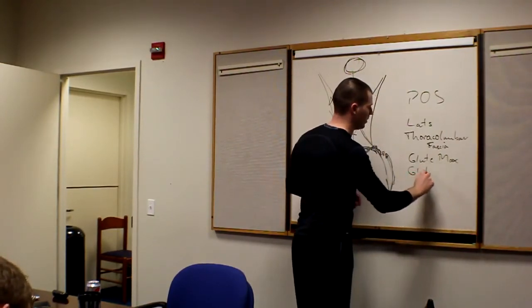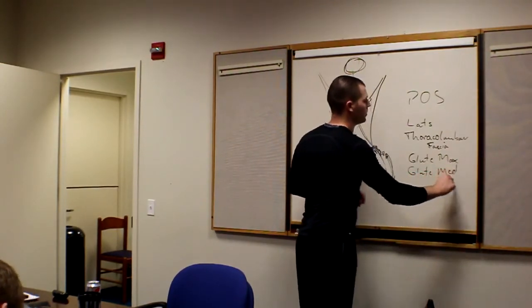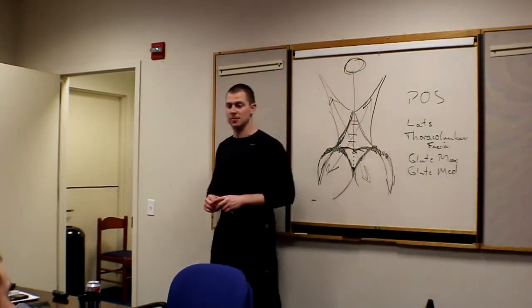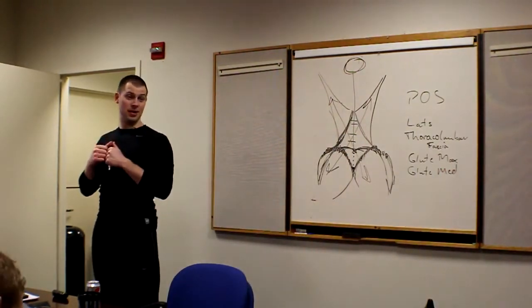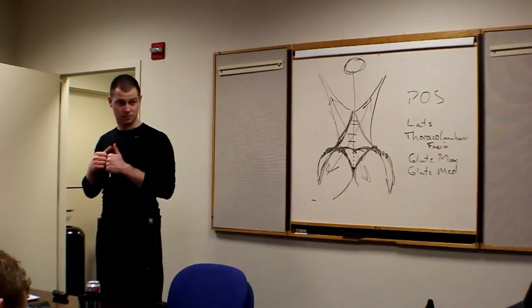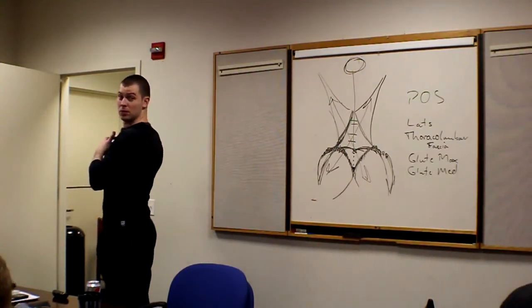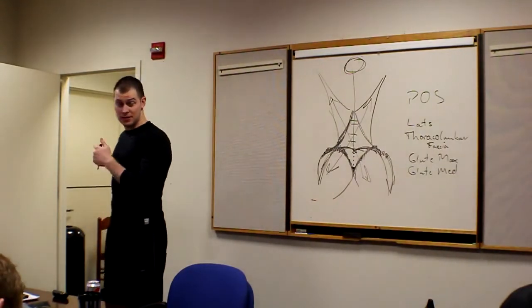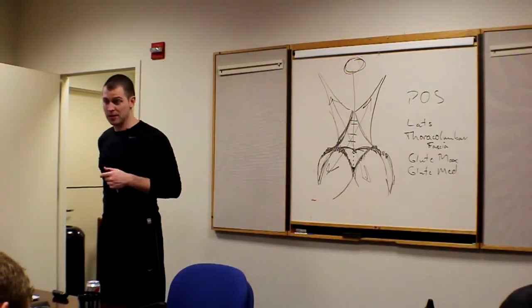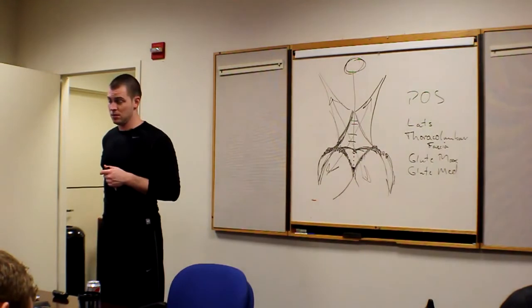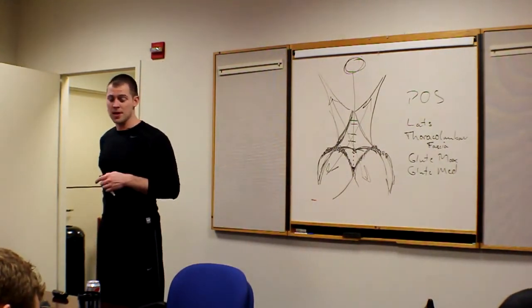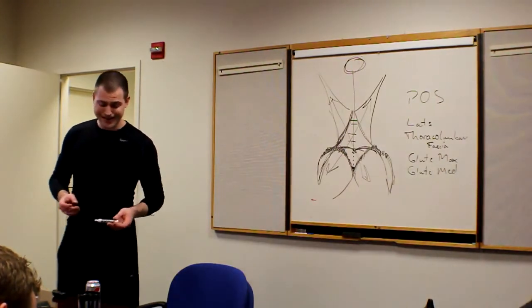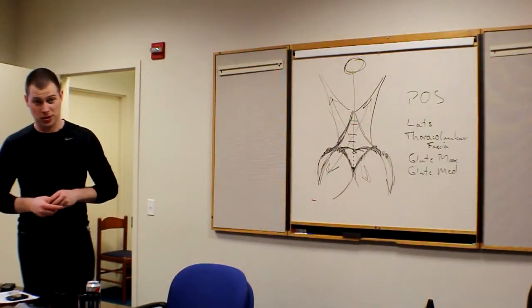And glute med. The function of this posterior oblique subsystem is to lift, right? Extend the hips. To turn out. To stabilize the lumbar spine and SI joint. And then this is the tricky one.